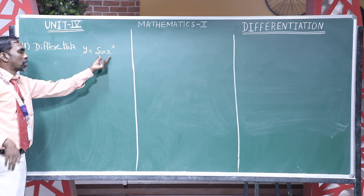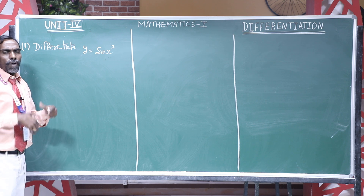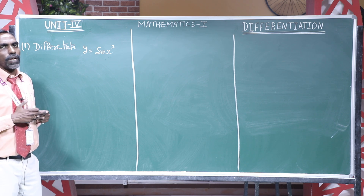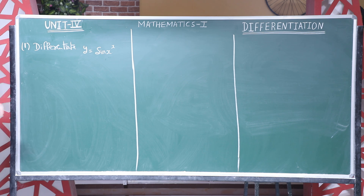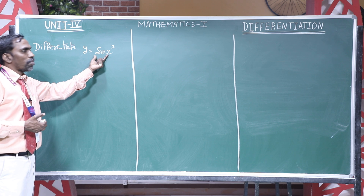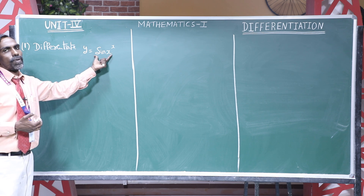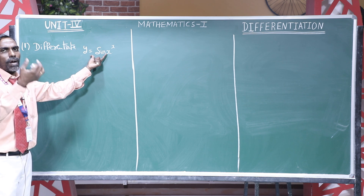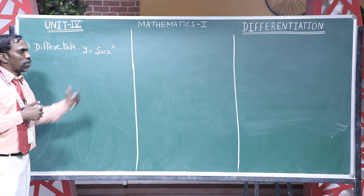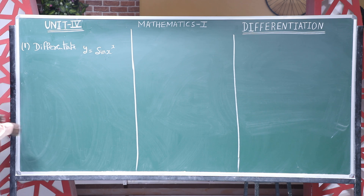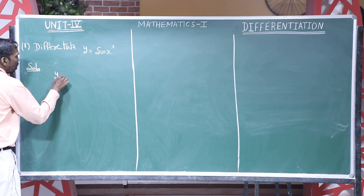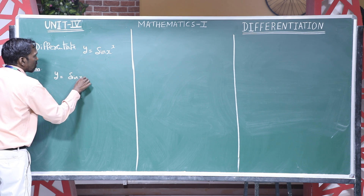Now, you know how to differentiate a function normally, but this function has x as the power. So if you have a variable power x, how can you solve it? The only option is to use logarithm — take the logarithm on both sides, apply the formula log of x power m equals m log x, and then differentiate. Whenever powers are given, logarithmic differentiation is the only option.